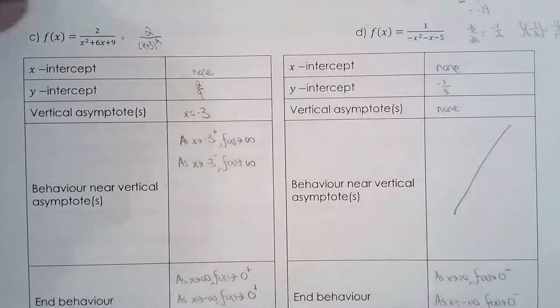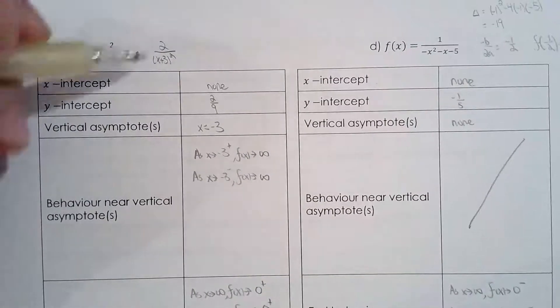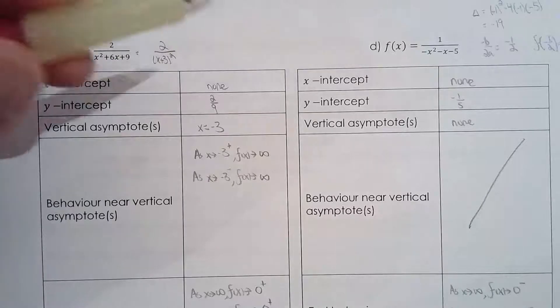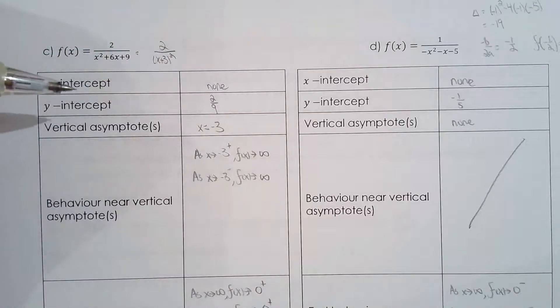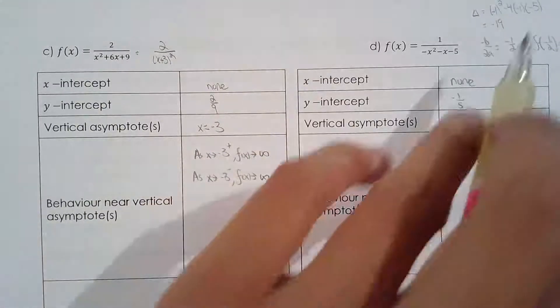I'll do one more. For C you have the single vertical asymptote scenario and for D you actually have no vertical asymptote. How did I know D had no vertical asymptote? I solved for the discriminant.